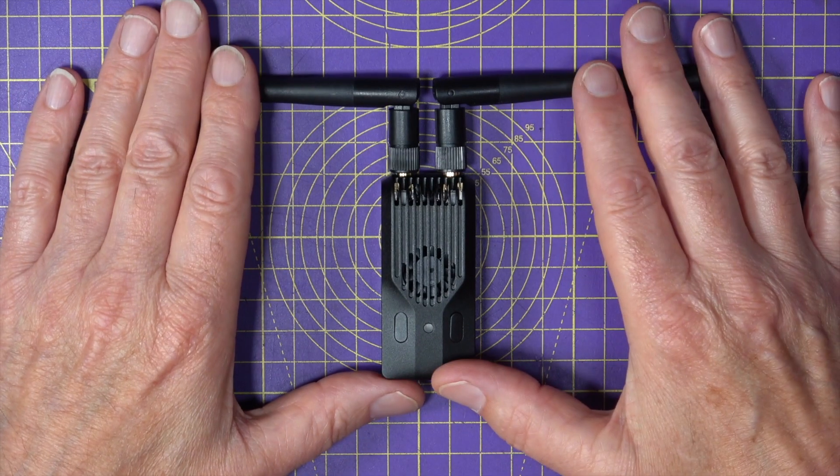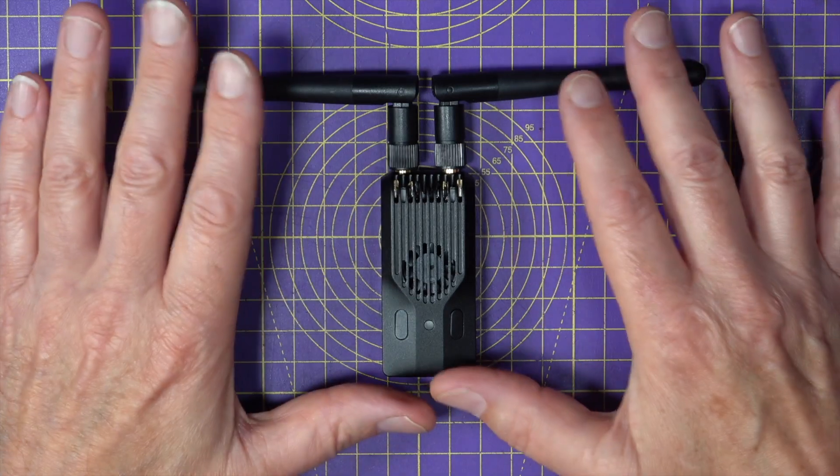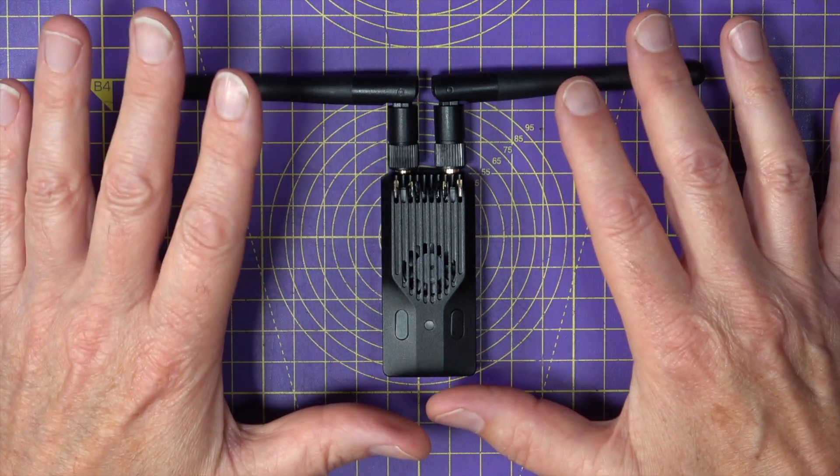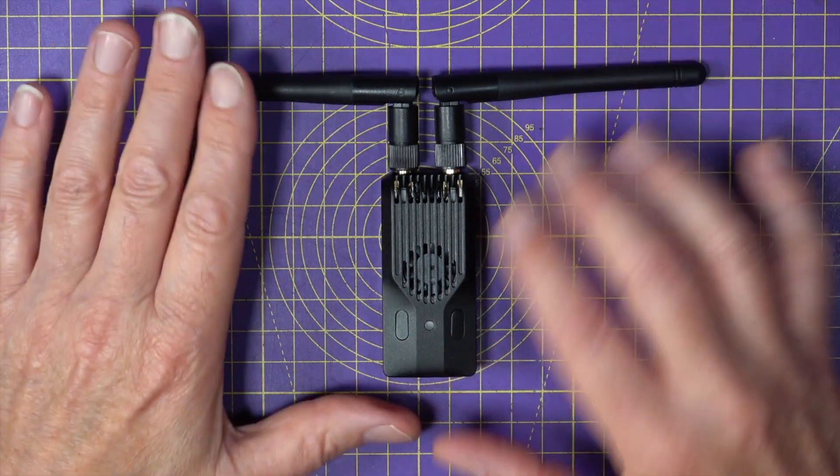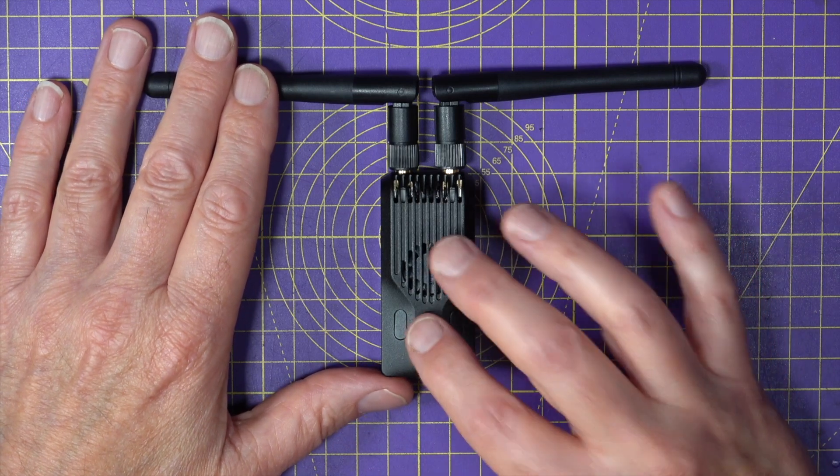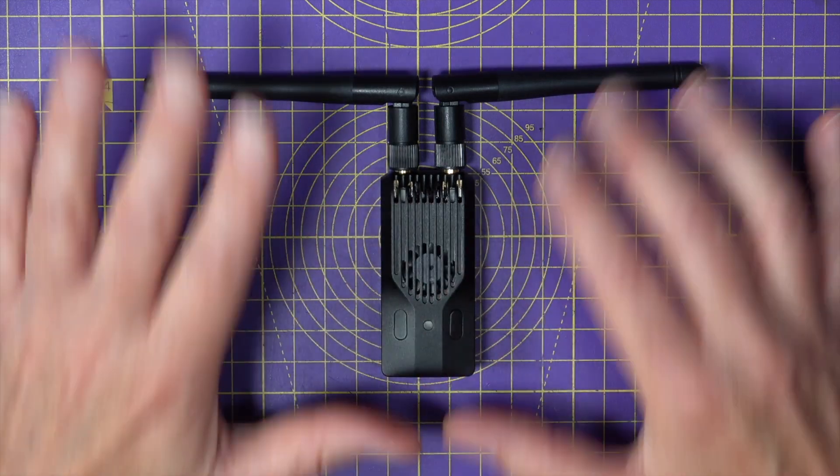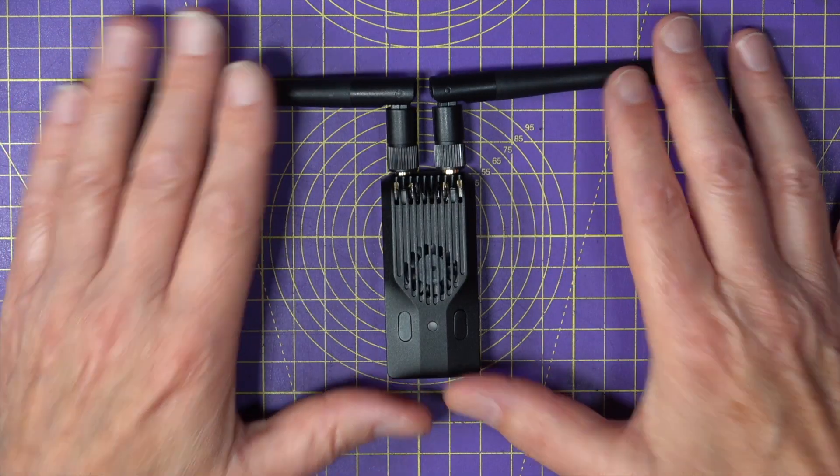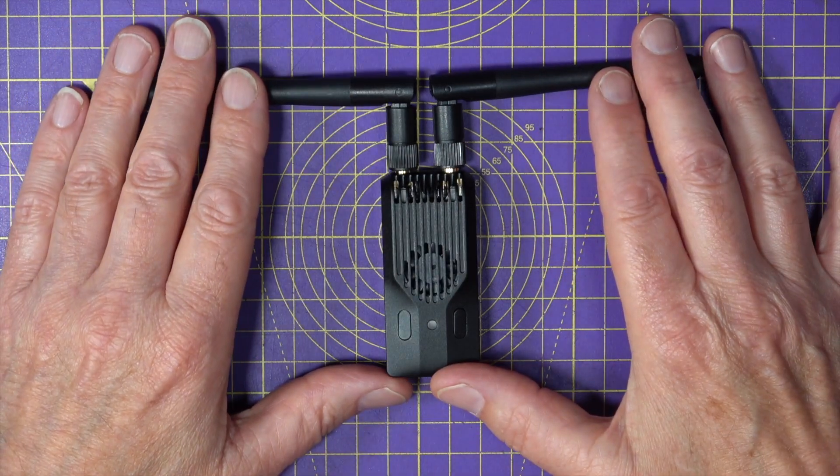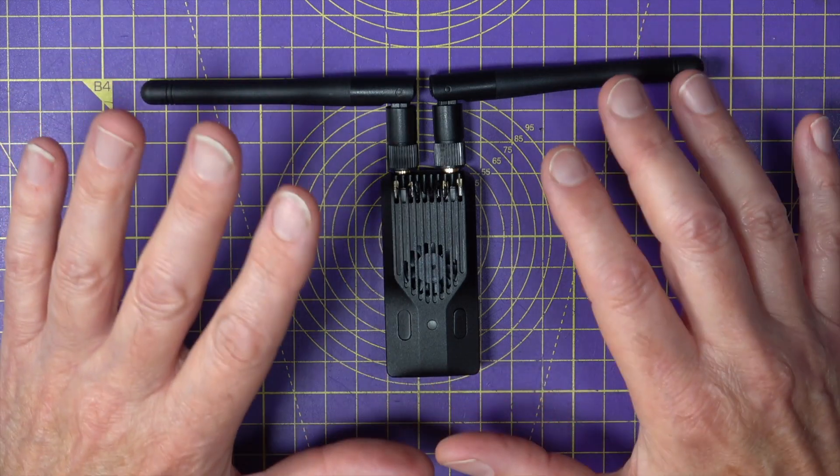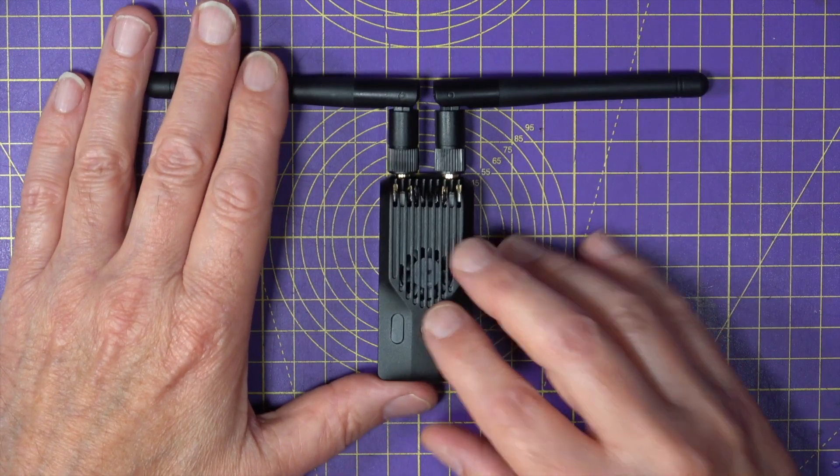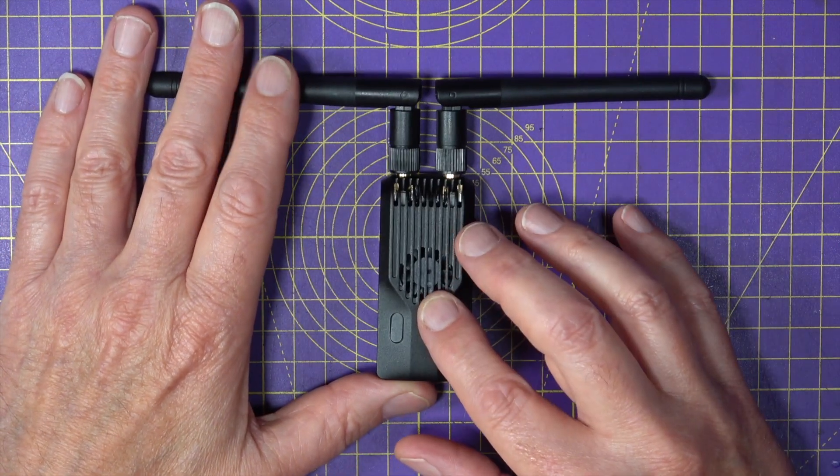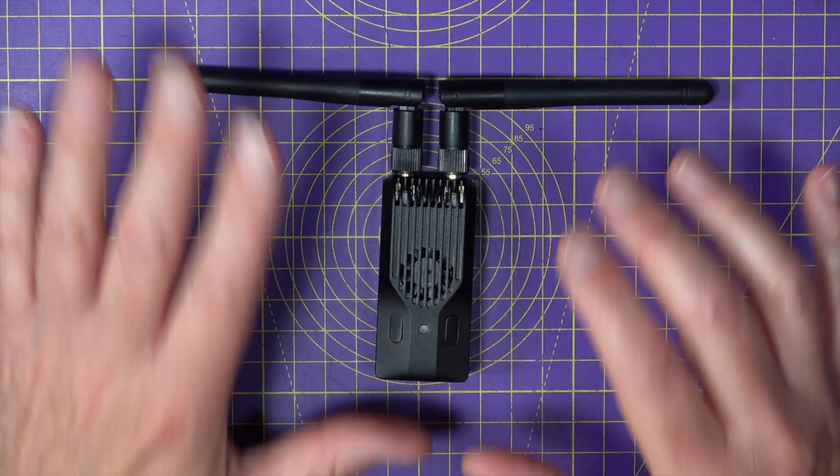This BetaFPV SuperG Nano transmitter is a true Gemini diversity transmitter that pretty much guarantees the delivery of your ELRS packets and will keep the link quality value at around 99-100% even under extreme conditions. I'll go over the specs of this first and then give you a quick overview of what Gemini mode is at the end.